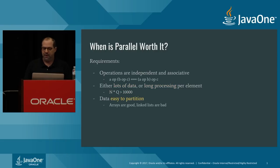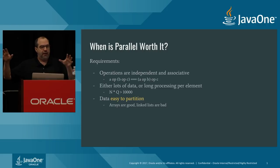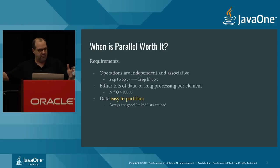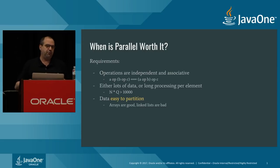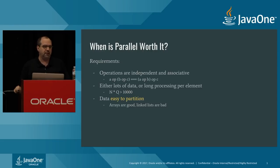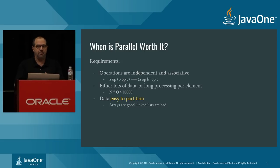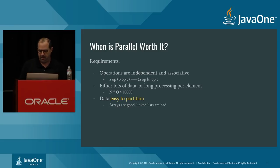Another requirement people don't discuss often: the data needs to be easy to partition. Parallel streams use a fork-join pool under the hood, dividing work into equal sections. An IntStream with a range is easy — it knows the start and end. But stream.iterate with a limit asks too much. If you're dealing with an array as your data source, that's a dream scenario; a linked list, not so much.